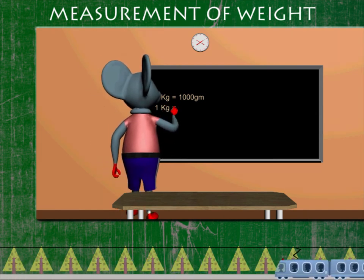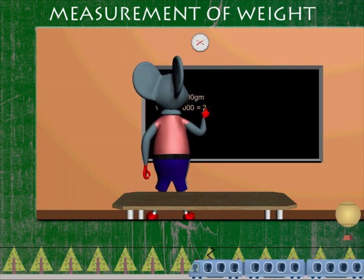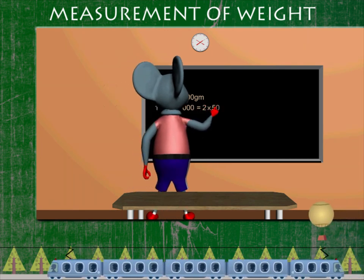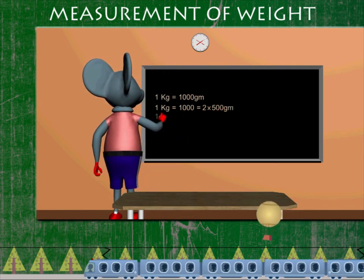1 kilogram is also made up of 2 parts of 500 grams, or half a kilogram is 500 grams.